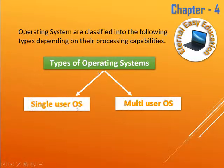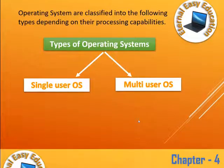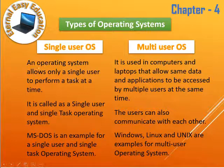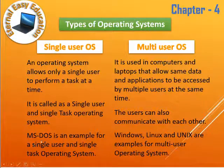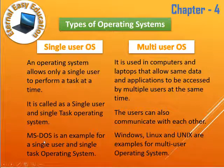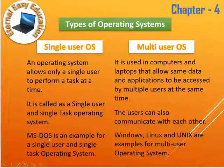Operating systems are classified based on processing capabilities. A single-user operating system allows only a single user to perform a task at a time — it is also called a single-user, single-task operating system. An example is MS-DOS (Disk Operating System). It is not in wide use today, but many commands are still used. DOS is character-oriented with no colors, images, or graphical interface.